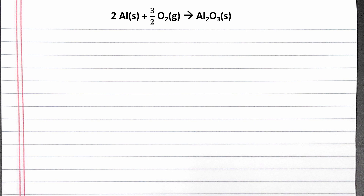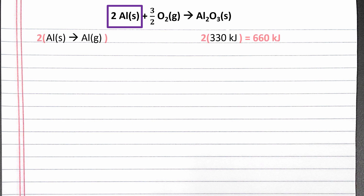The first information we were given in the problem is the sublimation energy of aluminum. Sublimation is going directly from solid to gas. This is the only equation that will contain solid aluminum, so all the solid aluminum in the overall reaction must come from this equation. We need two moles of solid aluminum as a reactant, so we multiply the sublimation equation by two, which also multiplies the enthalpy of sublimation by two.